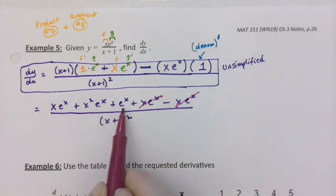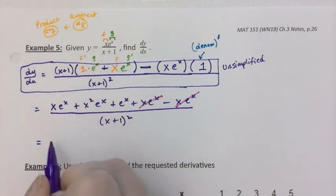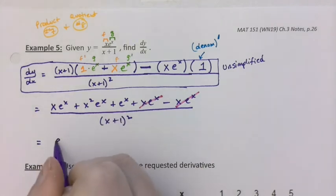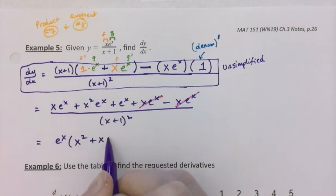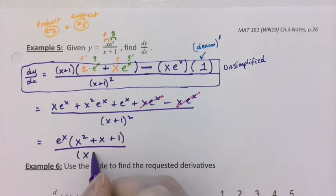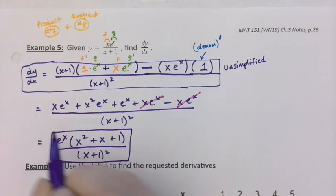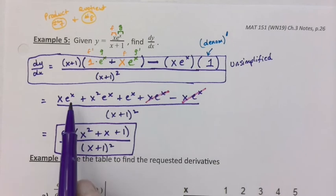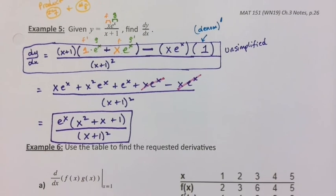That leaves me these three terms left, and those three terms all have an e to the x in common. So I could simplify this — take e to the x out — and I'm going to rearrange my terms. I've got an x squared, an x, and a 1. And that's all over x plus 1 squared. And we're done. So I factored e to the x out and rearranged my terms. We're calculus students, so we can do that kind of thing.